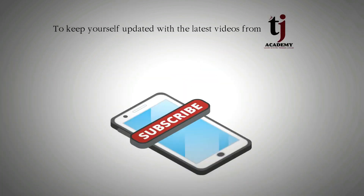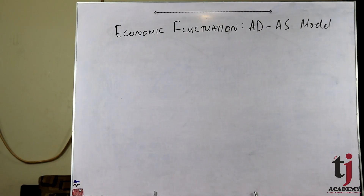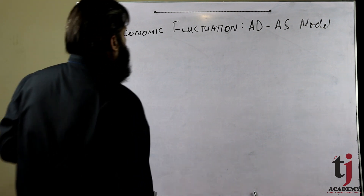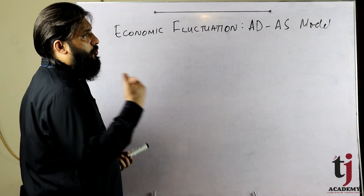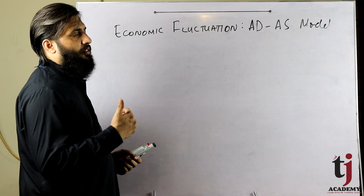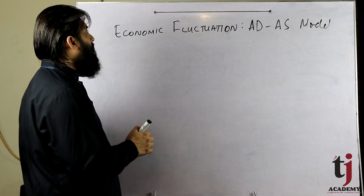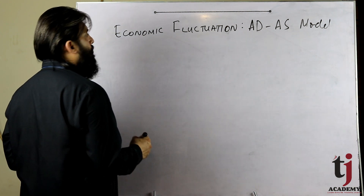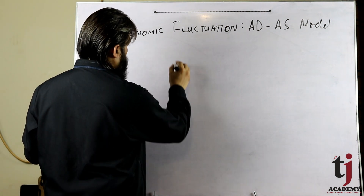To stay updated, subscribe to TJA Academy. Bismillahirrahmanirrahim. Today we have seen the previous lectures on flexible prices, aggregate demand and aggregate supply. Today we are developing a combined model — the economic fluctuation aggregate demand and aggregate supply model.